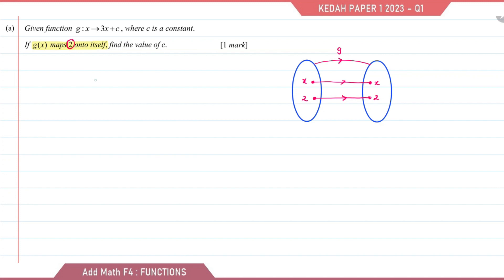So we can write this as g(2) is equal to 2. We replace x with 2, so 3 times 2 plus c equals 2. So 6 plus c equals 2, then c equals 2 minus 6, which is equal to negative 4.